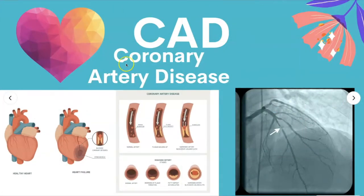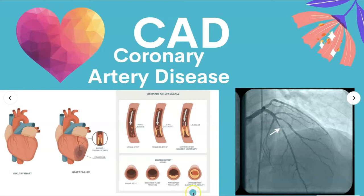CAD is coronary artery disease, which is when plaque starts to build up in a normal artery — beginning with plaque formation and fatty deposit accumulation until it narrows so much that blood can't get through and then blood clots. Here's an example of a blockage where blood can no longer get through; you can see how narrow it is.